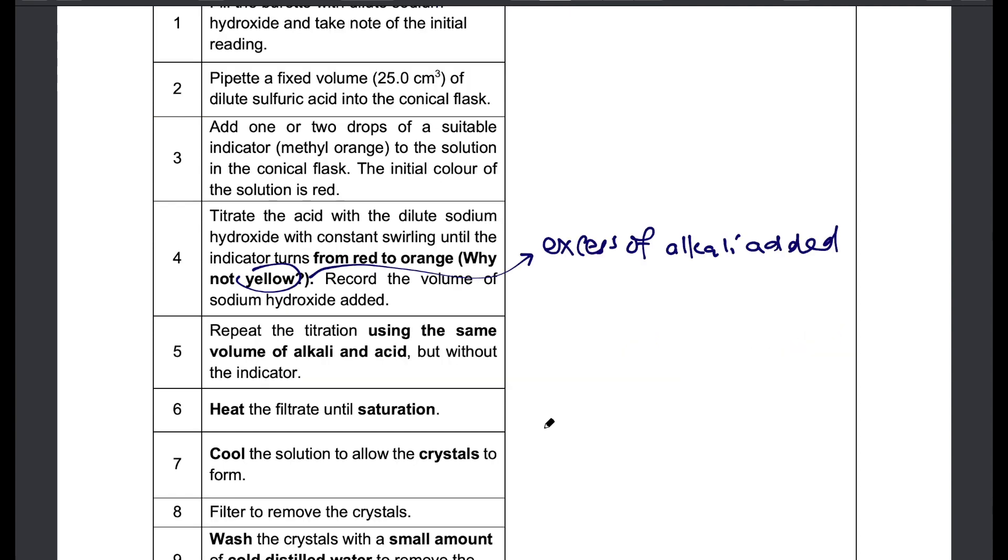Because I mentioned by having the indicator in your flask the indicator actually contaminates the salt that is formed, you need to repeat the same titration using the same volume of acid and alkali but without the indicator because the indicator will cause contamination.